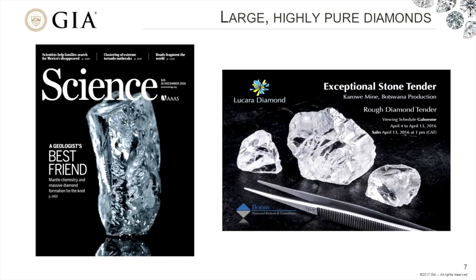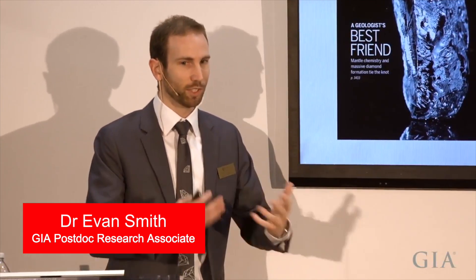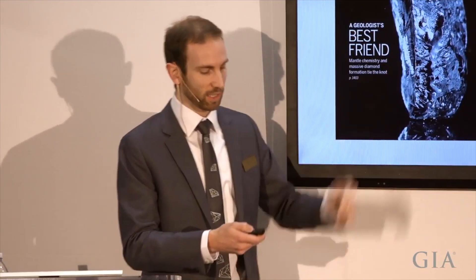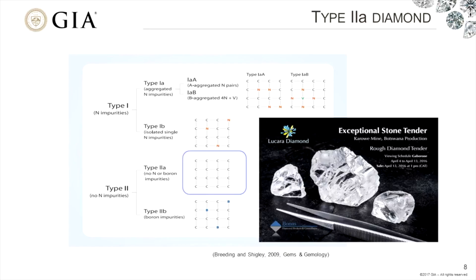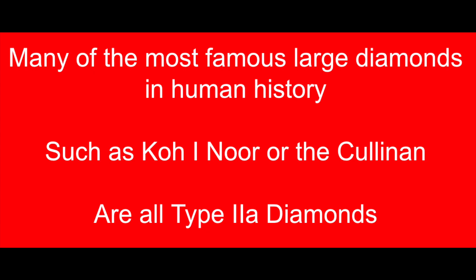Big diamonds — like on the cover of Science, this is the 404 carat diamond from Angola, or these large diamonds from the Karowe mine in Botswana. Diamonds like these have a set of characteristics: they're large, they're highly pure. And when I say highly pure, I mean that for the most part, these are almost always Type 2A diamonds.